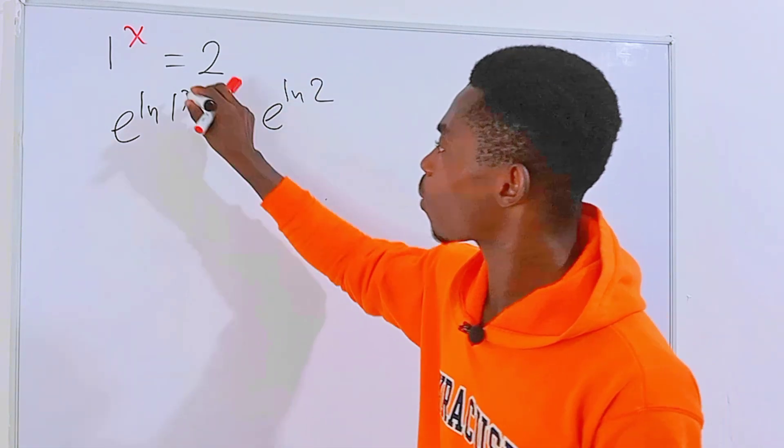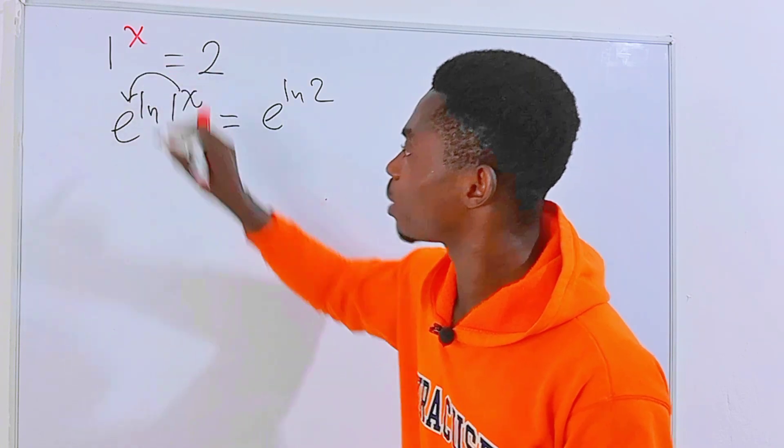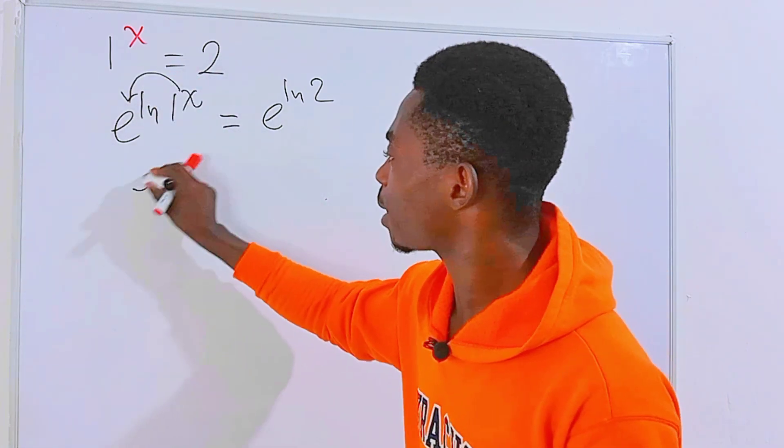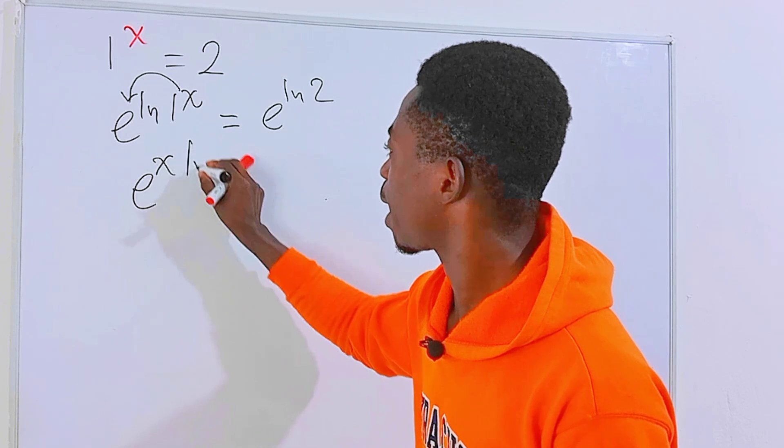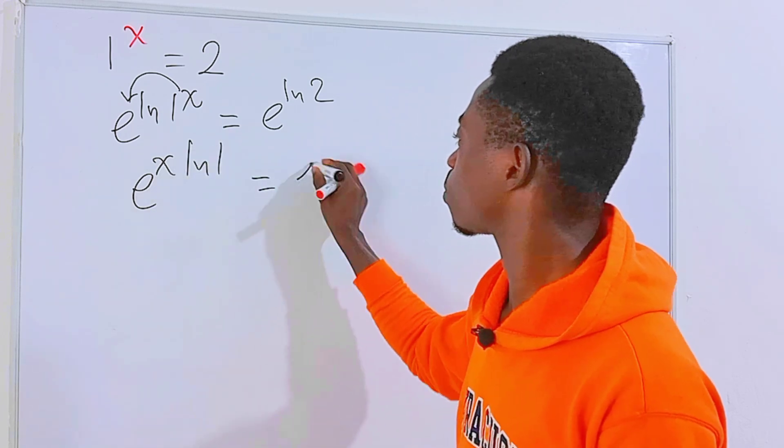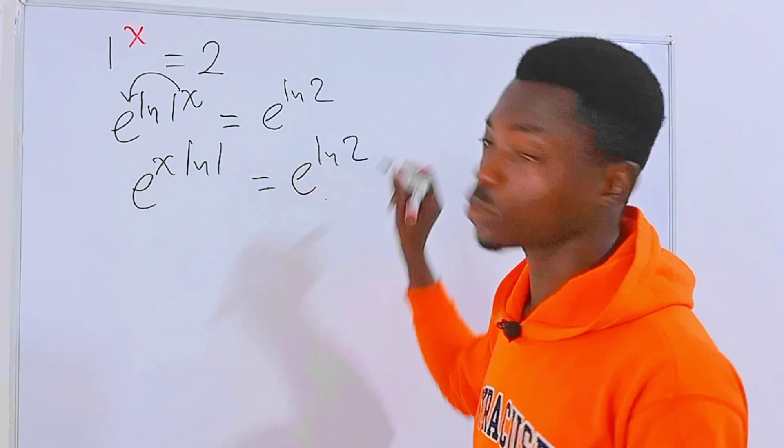Then from the properties of log, we can move the power to the front here so that we get e to the power x ln of 1 equals e to the power ln of 2.